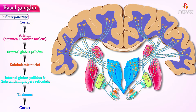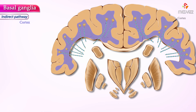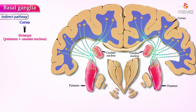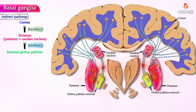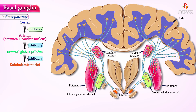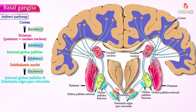The indirect pathway starts from the cortex to the striatum — this segment is excitatory and activates inhibitory neurons within the striatum. The inhibitory neurons from the striatum synapse with the external segment of the globus pallidus. The neurons of the external globus pallidus then send inhibitory fibers to the subthalamus. Additionally, the subthalamus sends excitatory projections back to the globus pallidus internus and substantia nigra pars reticulata. So functionally, the striatum inhibits the globus pallidus externus, causing disinhibition of the subthalamus. As a result, the subthalamic neurons become more active and excite the internal segment of the globus pallidus.